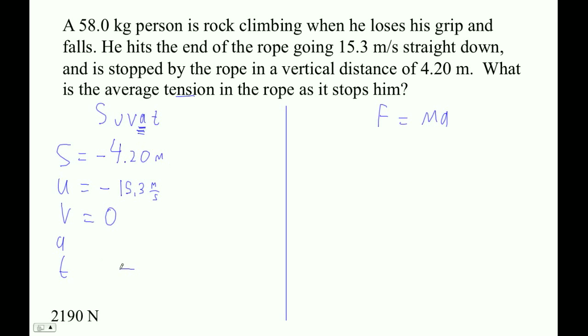And so we want to solve for A. We want to use a formula that has no T. So I'm going to choose V squared is U squared plus 2AS. All right, so 0 squared is 15.3 squared. Be careful to use the parentheses, or don't use the minus sign in your TI calculators. Plus 2 times A times negative 4.20.